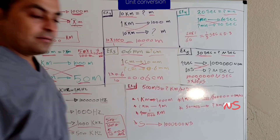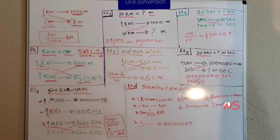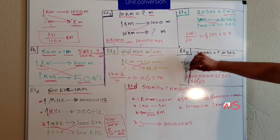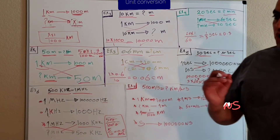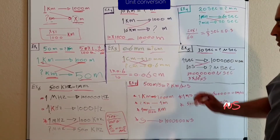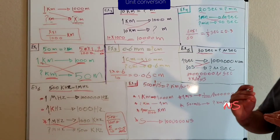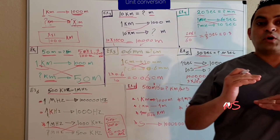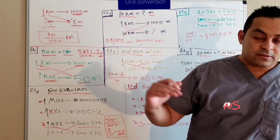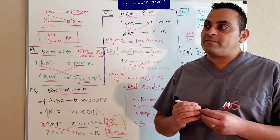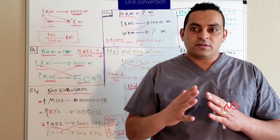Example number seven: we have 500 meters per second and we need to convert it to kilometers per microsecond. This is a complex conversion because speed has two units — one for distance and one for time — since speed equals distance over time. Other compound units include density, which equals mass over volume.